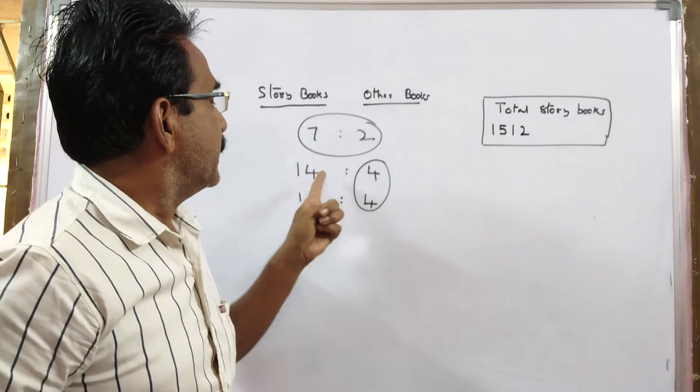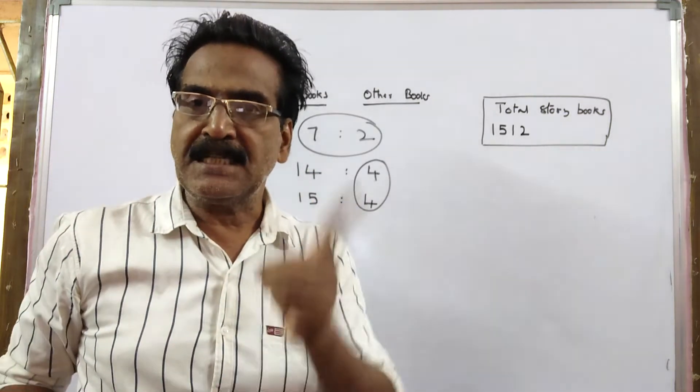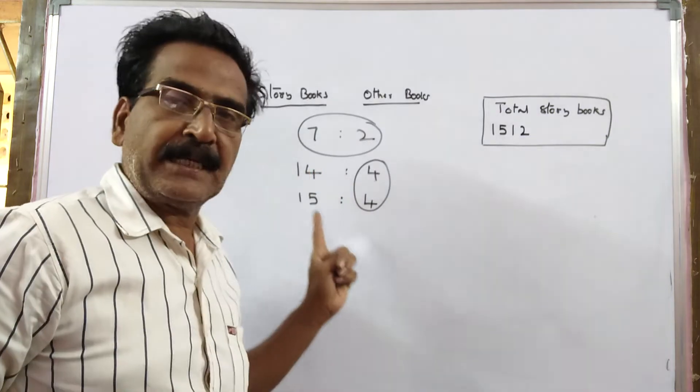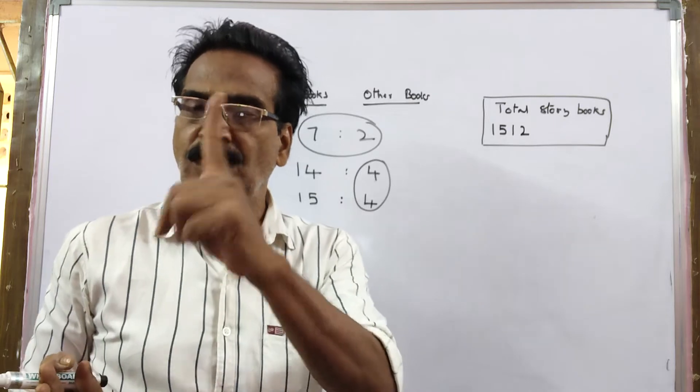In this process, the storybook's part is increased by 1. 14 becomes 15 is increased by 1. So, we have to find the value of 1 part.